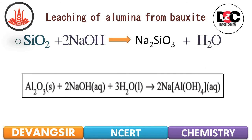The Leaching of Alumina from Bauxite: Al2O3 reacts with NaOH and water to give NaAl(OH)4. The impurity SiO2 reacts with NaOH to form Na2SiO3, which is called sodium silicate, and water molecules are liberated.